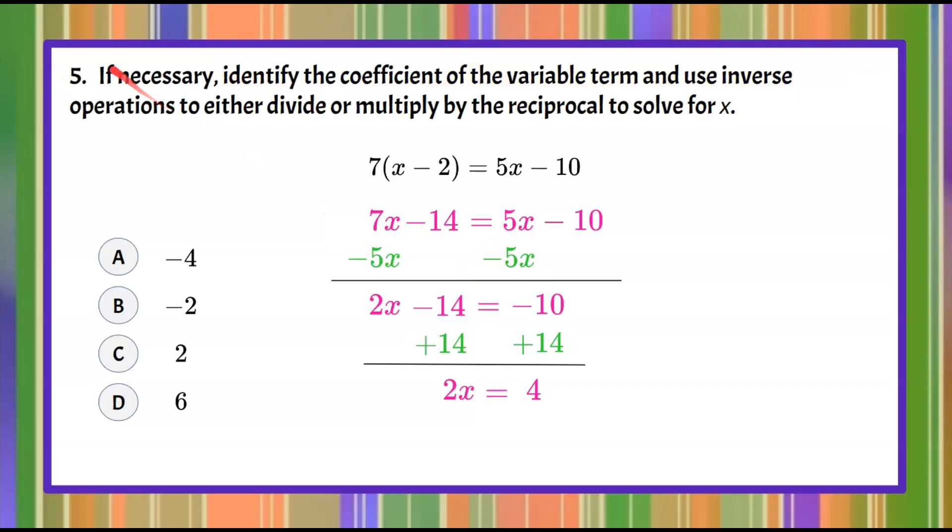Step five, if necessary identify the coefficient of the variable term and use inverse operations to either divide or multiply by the reciprocal to solve for x. So let's go identify our coefficient. Here is 2. 2 times x so we have a variable term and 2 is the coefficient. So we are going to do the inverse. This is 2 multiplied by x. The inverse of multiply is to divide.